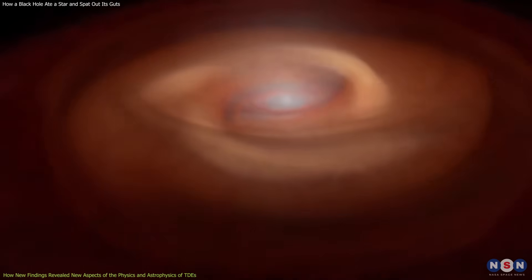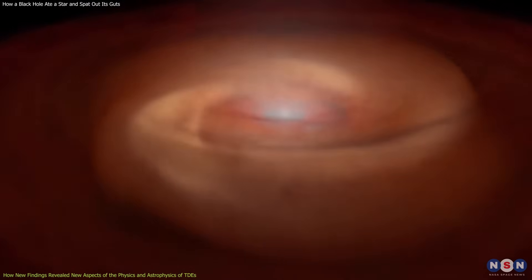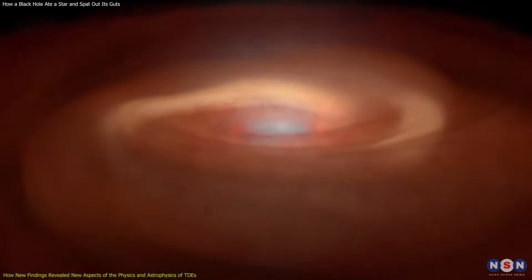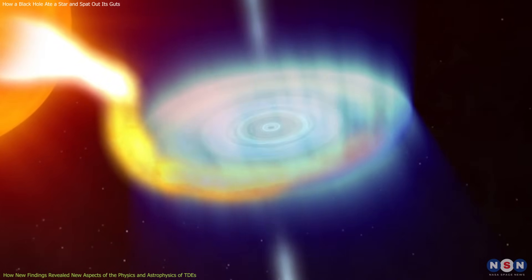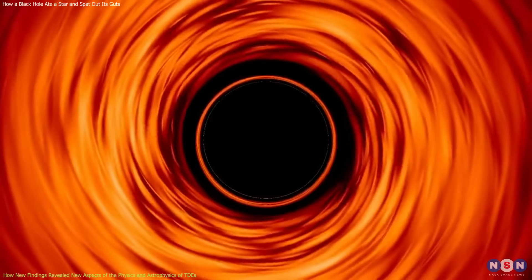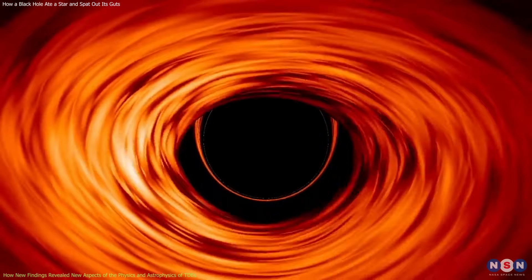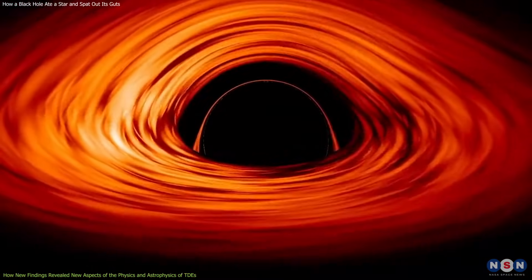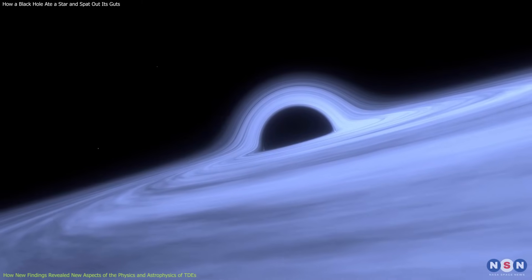The precession of the disk could be caused by the gravitational influence of another object near the black hole, such as another star or a smaller black hole. By studying the precession of the disk, we can learn more about the structure and composition of the disk, as well as the properties and environment of the black hole.